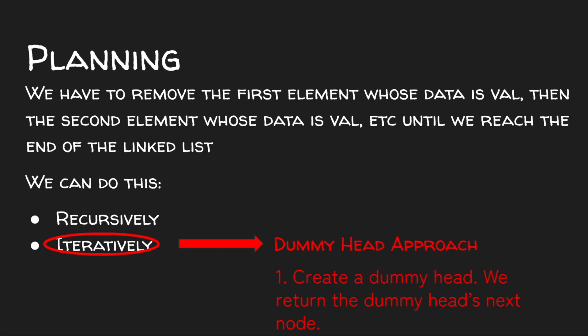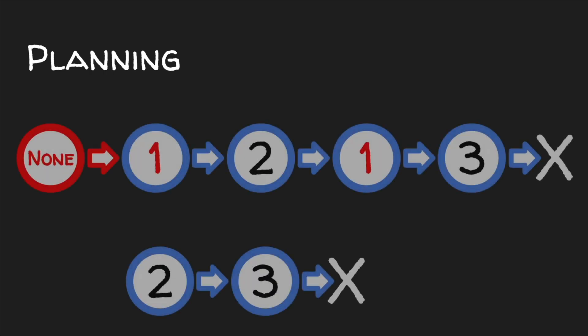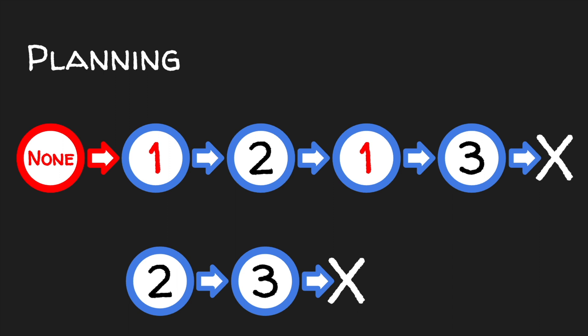Now that we have our first step and know we're taking an iterative approach, let's use an example test case to come up with the rest of our plan. I made a test case with an input of 1, 2, 1, and 3, where the value we want to remove is 1, giving an output of 2, then 3. I picked this because it's not too big, and it removes the head node, which is often an edge case in linked list problems.